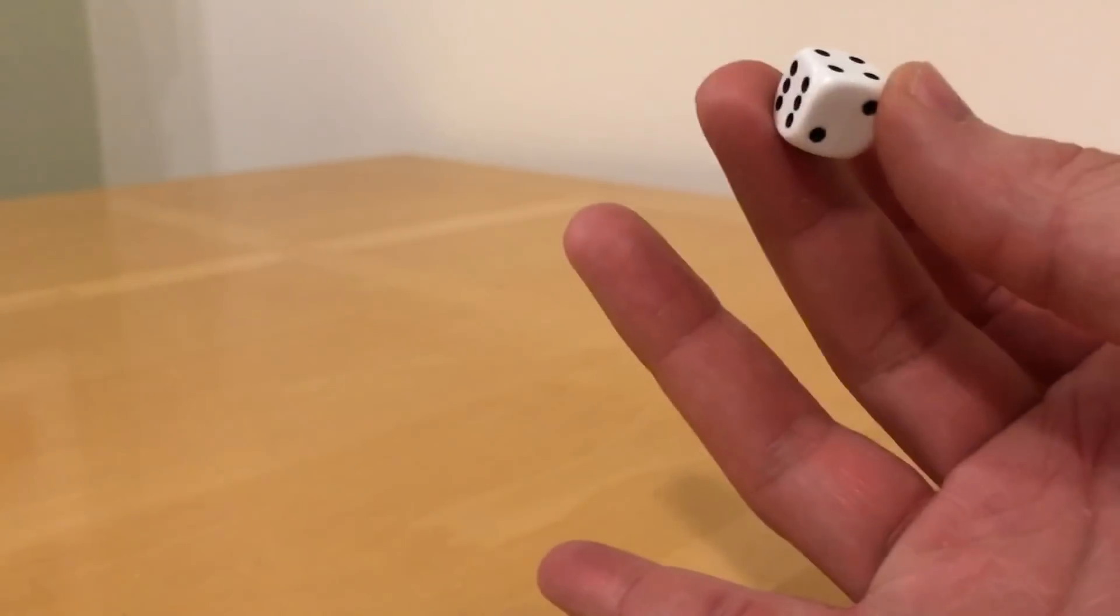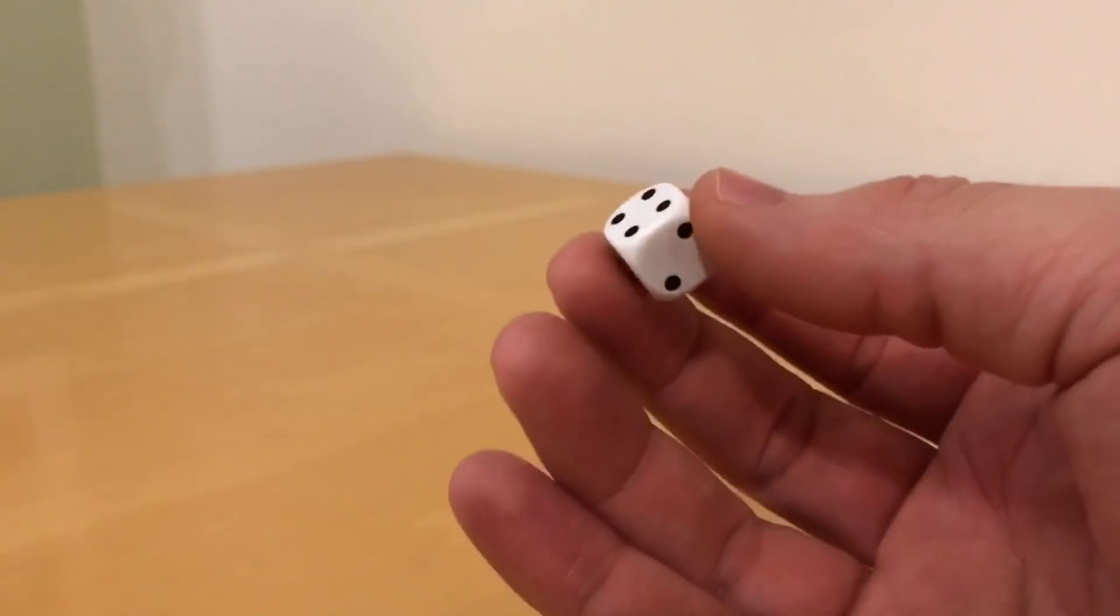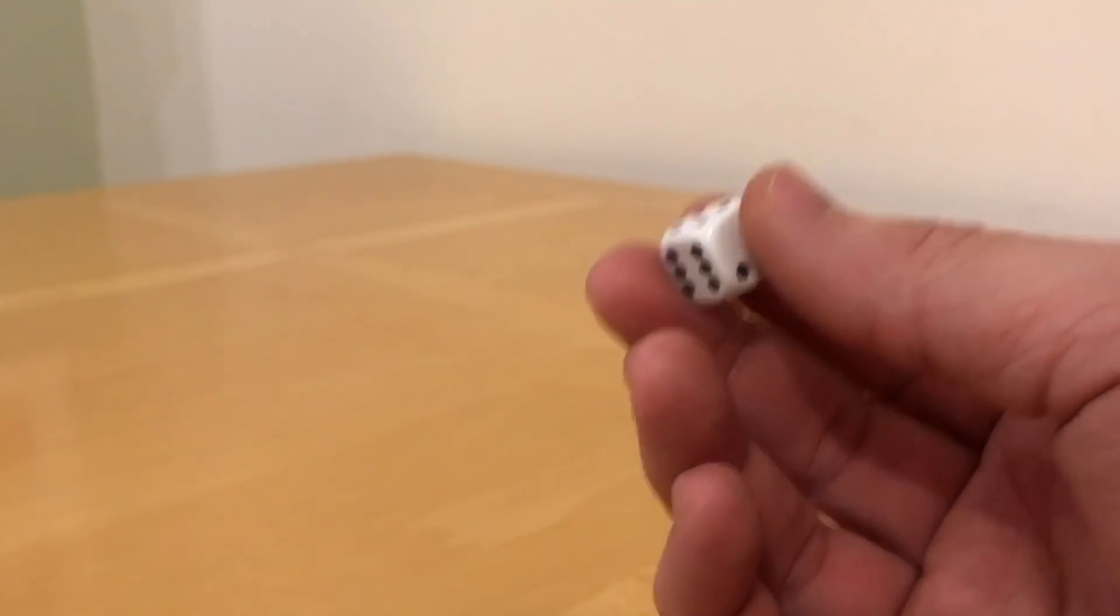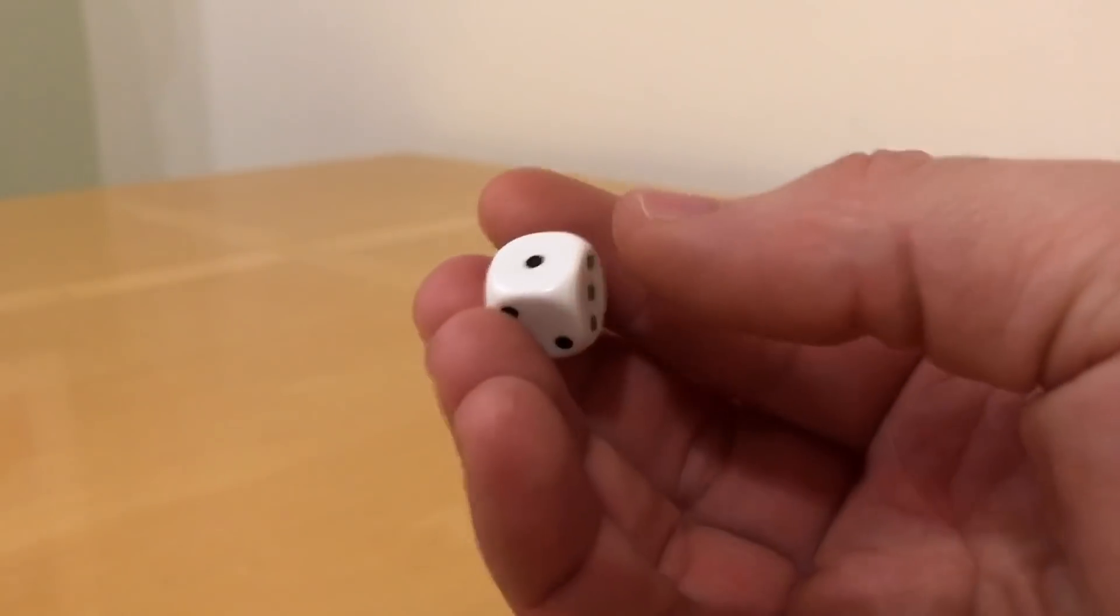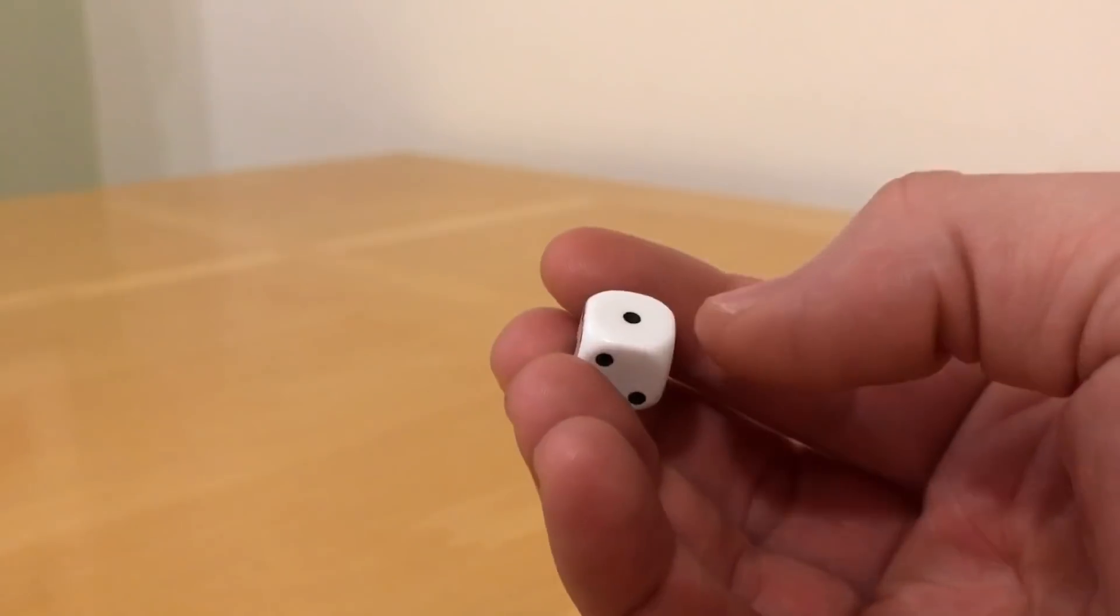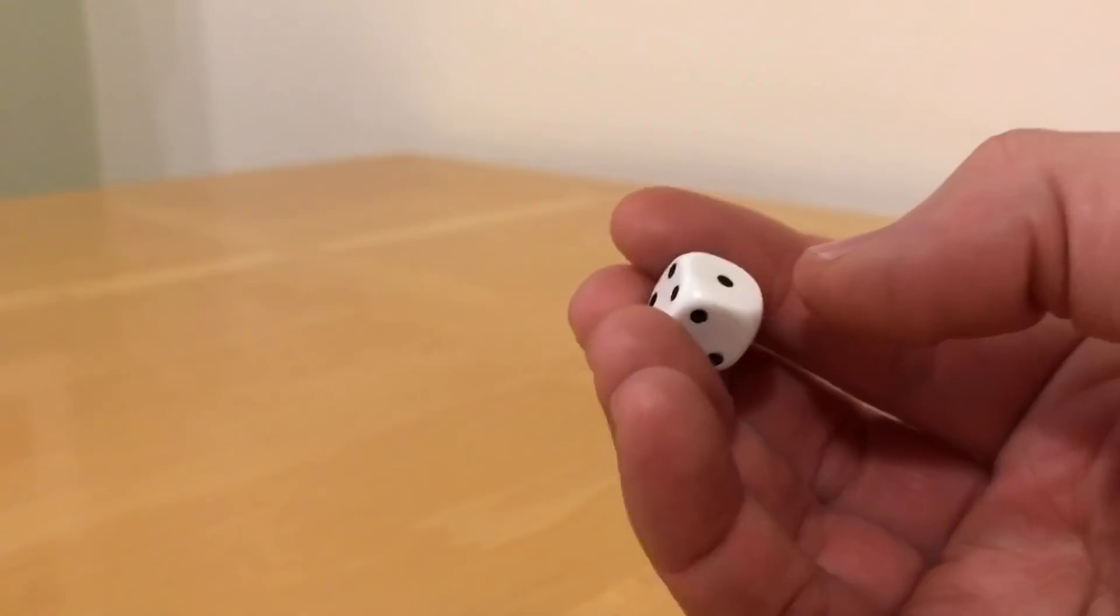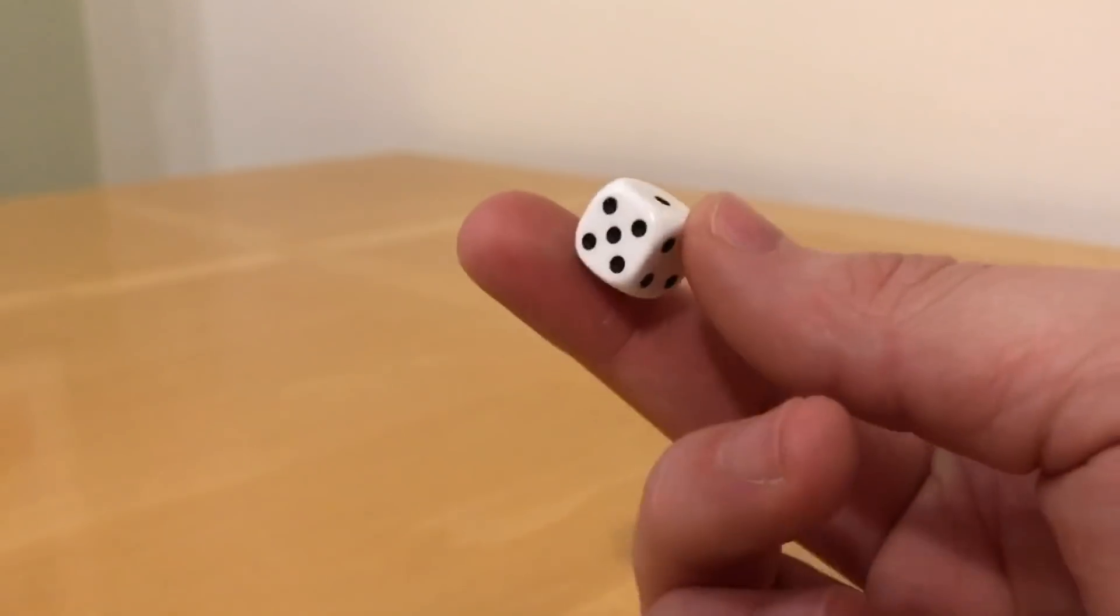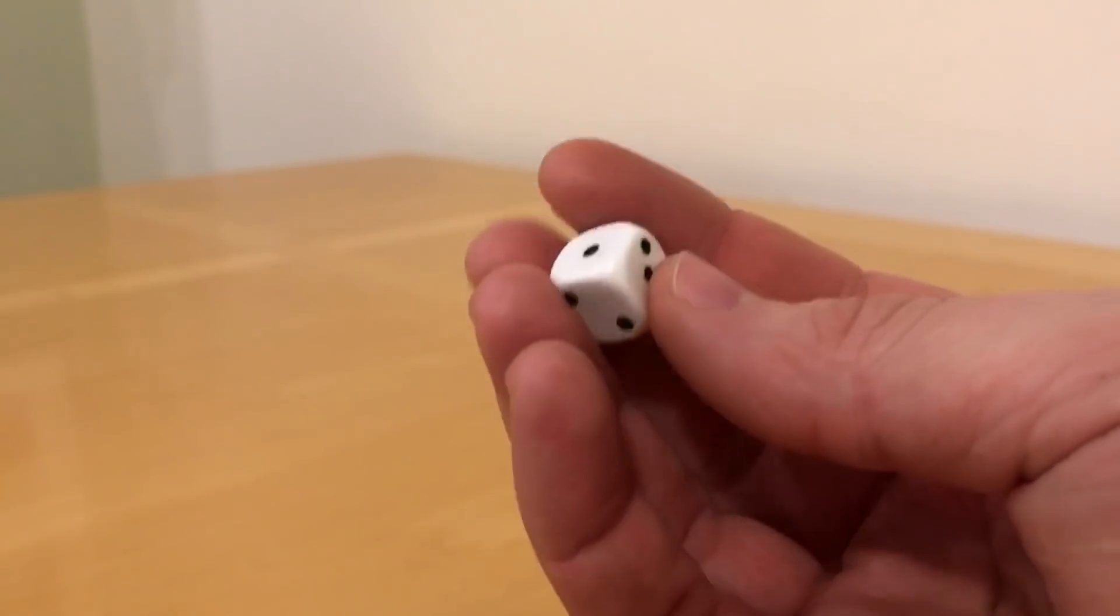They did a test where they took a group of dice and they controlled the throwing and did a total of 144,000 throws. The outcome of that result was that the one occurs 29% of the time, which is way ahead of what you would expect. You'd expect 16.6% recurring to happen. Their conclusion was that these little GW dice do not produce an even probability result.